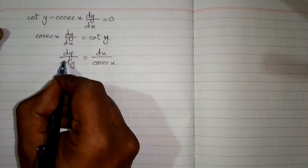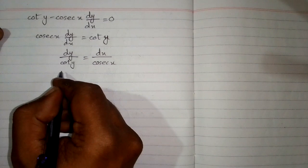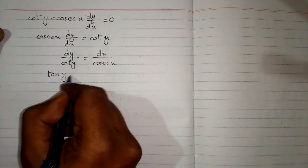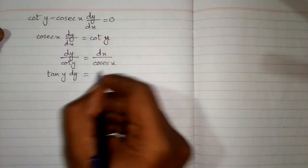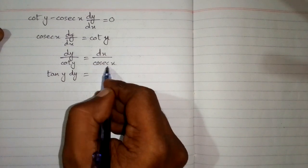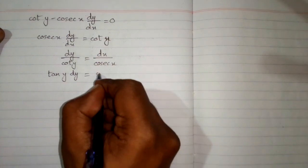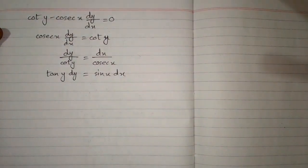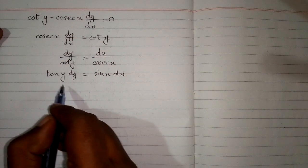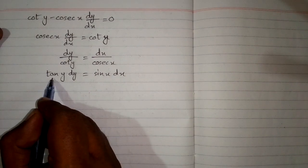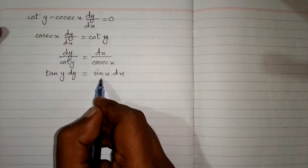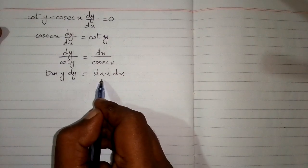We know that 1 upon cot y is tan y, so we write tan y dy. And 1 upon cosec x is sin x, so we write sin x dx. The coefficient of dy is tan y, a function of y, and the coefficient of dx is sin x, a function of x.